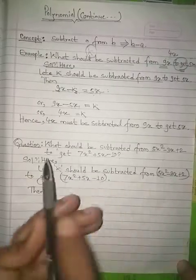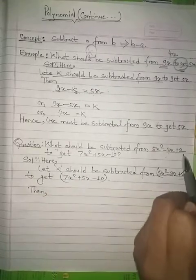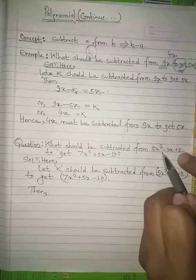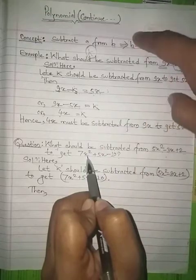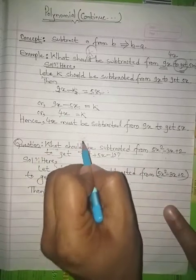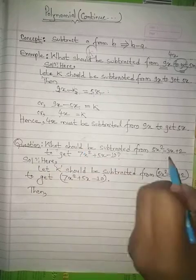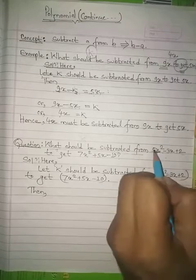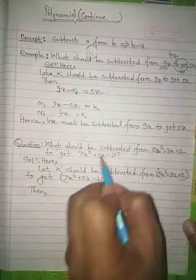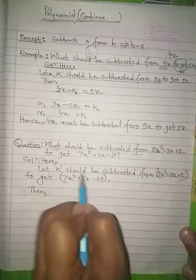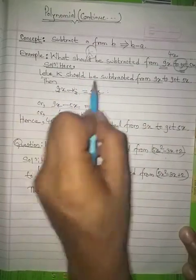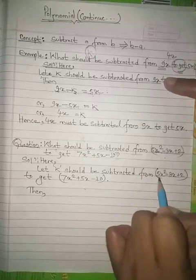Now let us solve the main question: what should be subtracted from 5x² minus 3x plus 2 to get 7x² plus 5x minus 10? Just as before, 'what should be subtracted' means we let K be subtracted from this polynomial to get the other polynomial. Don't use the same variable already used in the question.